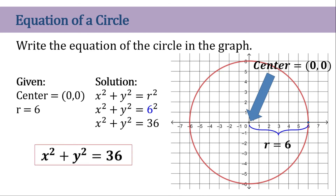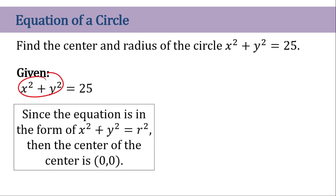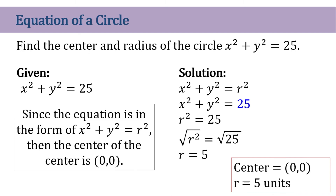Next: find the center and the radius. This is the vice versa — we are given an equation and need to find the center and radius so we can graph it. Since the equation is in the form x² + y² = r², we can say the center is at (0, 0). We equate 25 to r² and take the square root of both sides to get r = 5. So that is our center and radius.